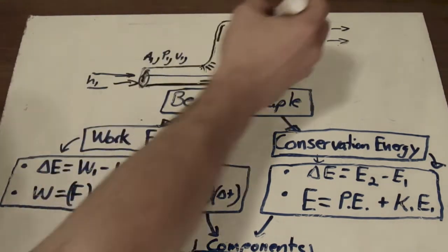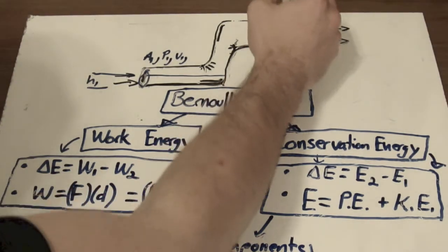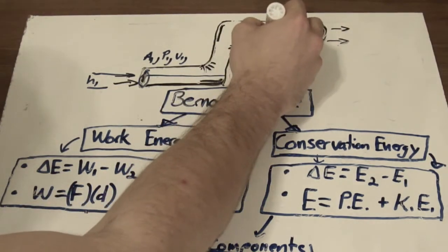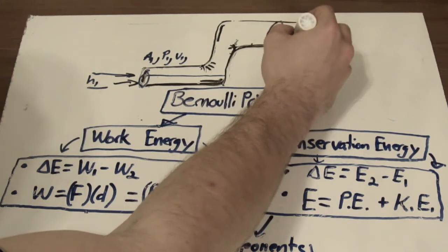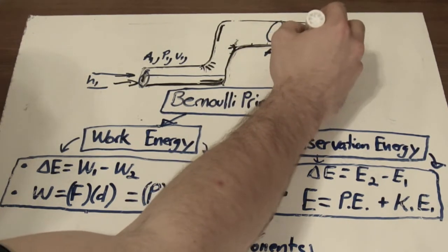Looking at the second set, we have A2 up here. We're also going to have a different pressure and a different velocity.